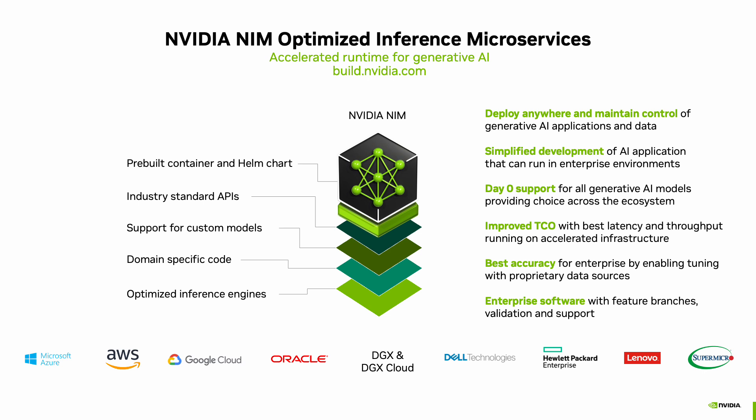NVIDIA NIMs are easy-to-use inference microservices for accelerating the deployment of foundation models on any cloud or data center. They are a simple way to deploy AI models with a pre-built container and Helm chart, using standard API paths. Inference engines are optimized for the model and the hardware it runs on, delivering performance no matter the application.